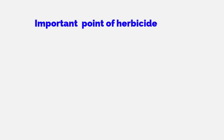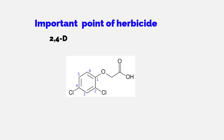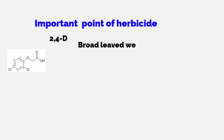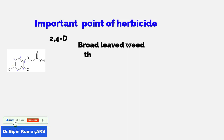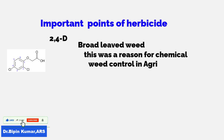In this video we are going to talk about important points of herbicides. First, we will discuss 2,4-D, which is the most important herbicide used for broad weed control. Chemical means of weed control began after the discovery of 2,4-D.